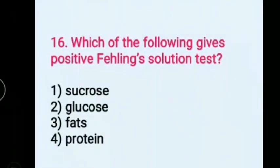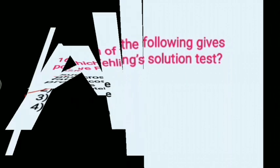Which one of the following gives a positive Fehling solution test? Options: 1) Sucrose, 2) Glucose, 3) Fats, 4) Protein. Answer: 2) Glucose.